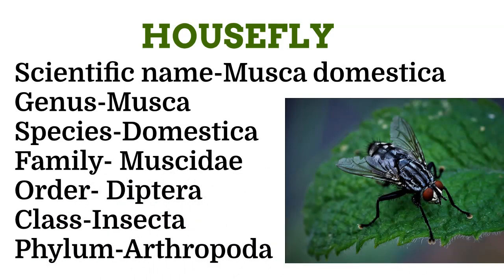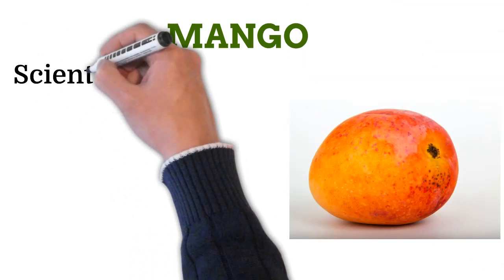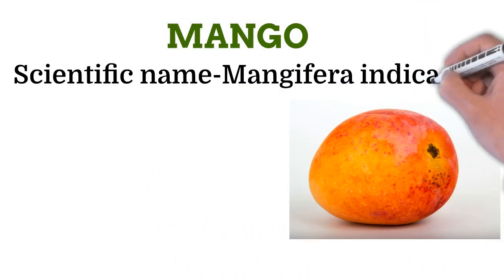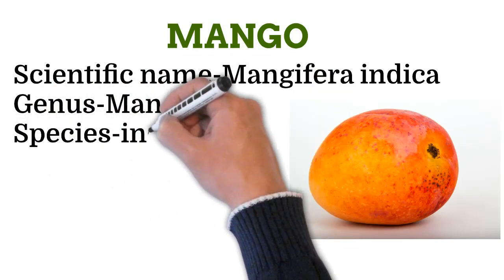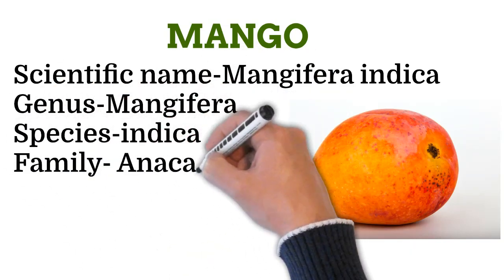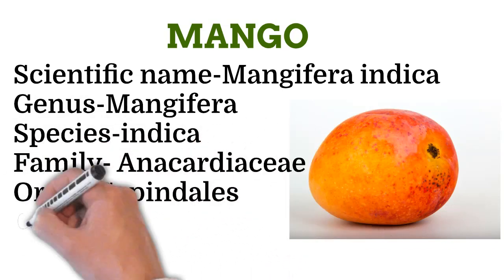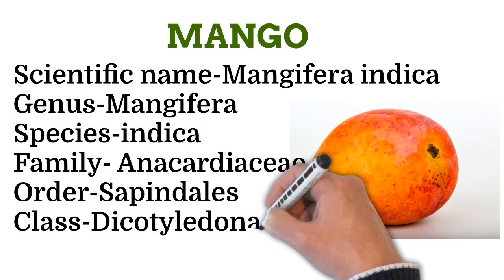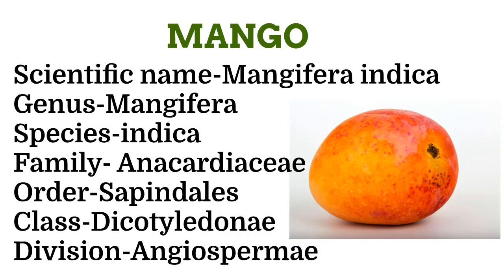That of mango: scientific name Mangifera indica, genus Mangifera, species indica, family Anacardiaceae, order Sapindales, class Dicotyledonae, division Angiosperms. That of wheat: scientific name Triticum aestivum, genus Triticum, species aestivum, family Poaceae, order Poales, class Monocotyledonia, division Angiospermae.